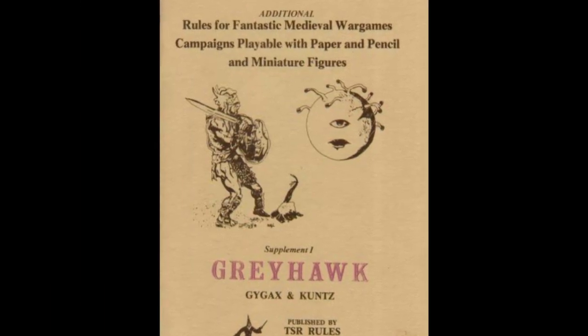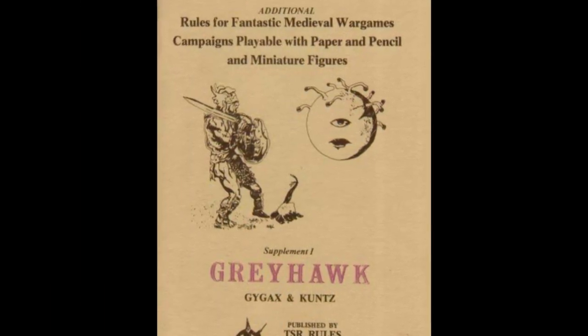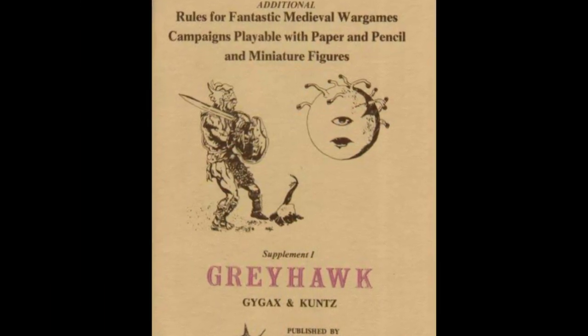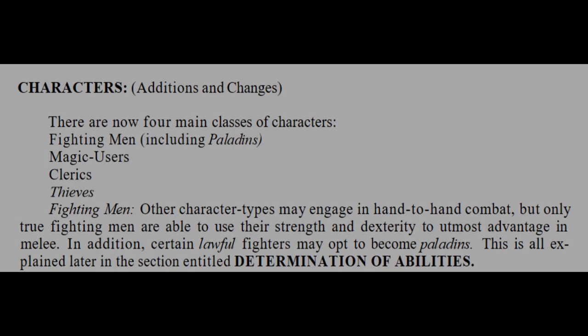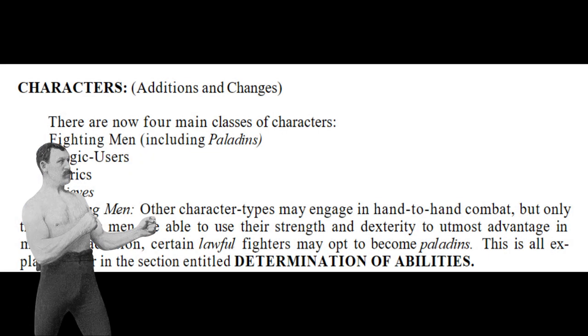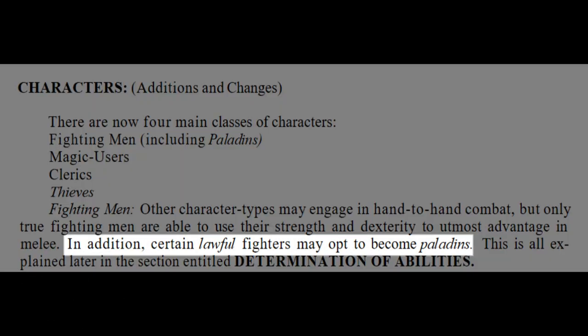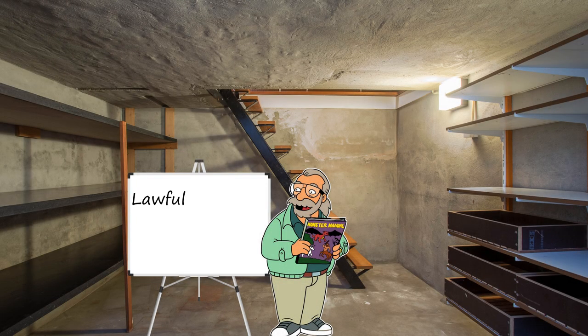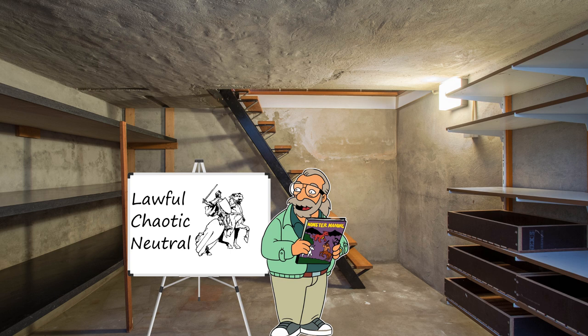The Paladin class first appeared in 1976 within Greyhawk, and they were initially a subclass of the Fighting Man. However, the prerequisite to be able to play as a Paladin was that you had to be of lawful alignment, and back in the original D&D there were only three alignments – Lawful, Chaotic and Neutral. Therefore, the requirement to be lawful immediately cemented the class into the White Knight archetype.